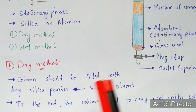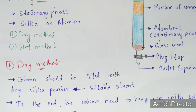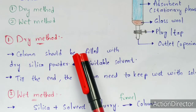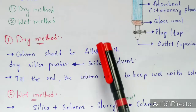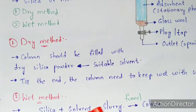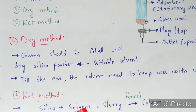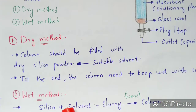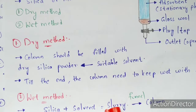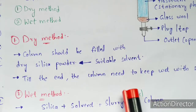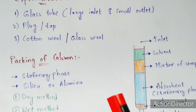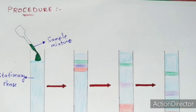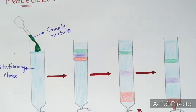In the wet method, the silica powder and solvent are mixed together first — before adding to the tube — to form a slurry. This slurry is then added into the column with the help of a funnel or injection. That is the process of the wet method.